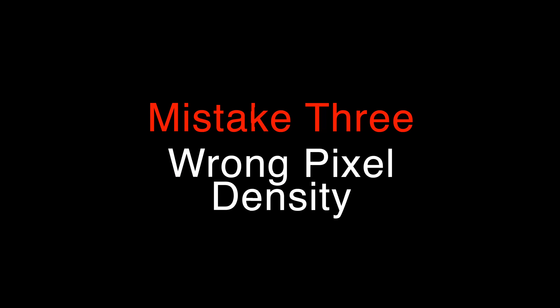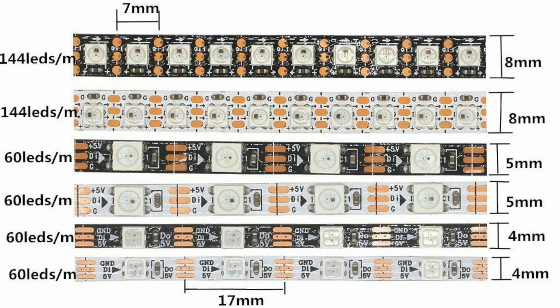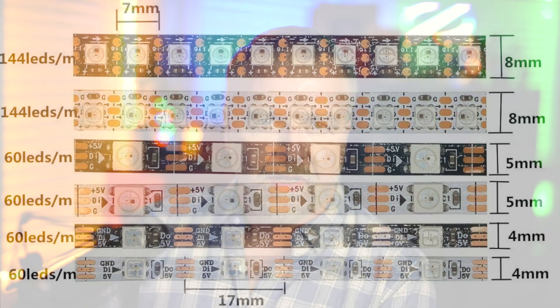Mistake number 3: Wrong pixel density. Our next big mistake is using strips of the wrong density. The lowest density I've seen is 30 LEDs per meter. The highest density in color strips seems to be 144 pixels per meter, which appears all but continuous from as little as 10 feet away. But you'd have to be fairly far away from a 30 or 60 per meter strip to not see it as a series of discontinuous dots.